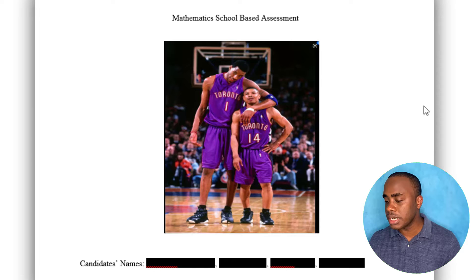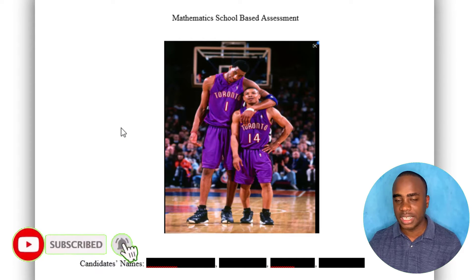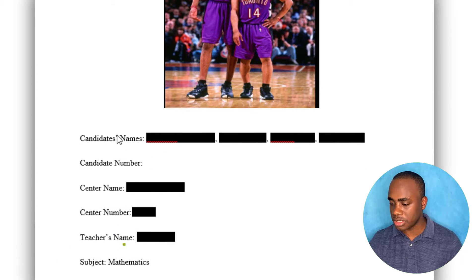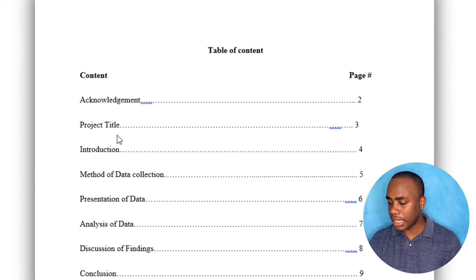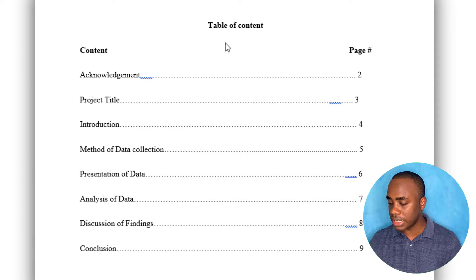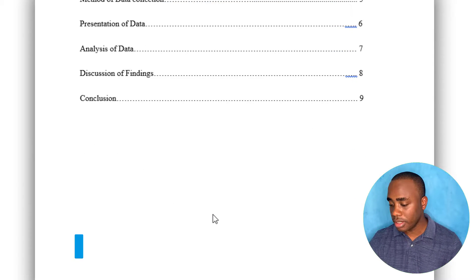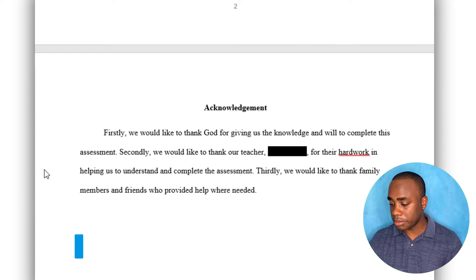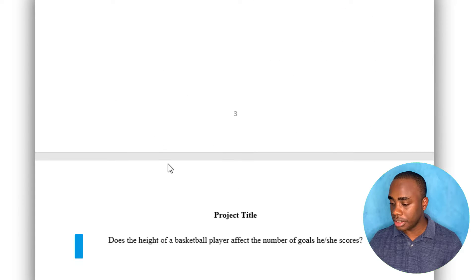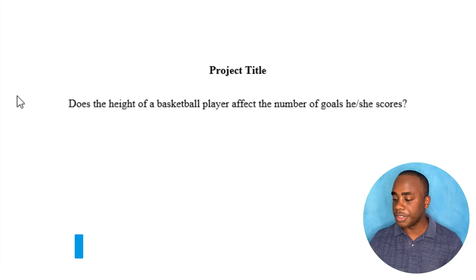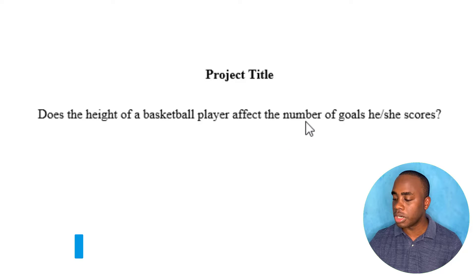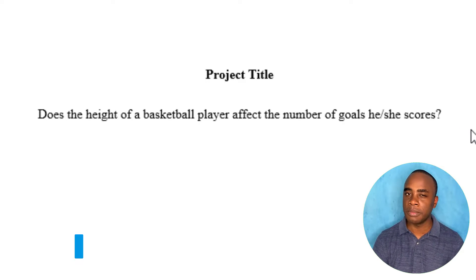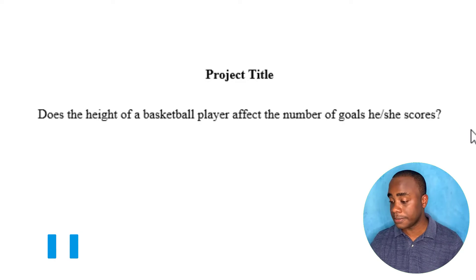In this first SBA, the student starts with a picture — that's a good idea. They have their table of contents with page numbers, so they get one mark there. They have their acknowledgement. And here is the project title: 'Does the height of a basketball player affect the number of goals he or she scores?' I think I'll give this project title the mark — it's clear and concise. Not too much information, but I have an idea of what's going on.